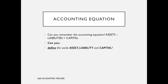Well, you should be able to by now. An asset is something that the business owns, or it could be an amount of money owed to the business, perhaps by one of its trade receivables — one of its credit customers. A liability is an amount owed by the business to someone else, so it could be a bank loan, a bank overdraft, or a trade payable — an amount owed to a supplier for goods bought on credit. And capital is the difference between the assets and liabilities; it's the net worth of the business, or the amount that the owner has invested in the business.